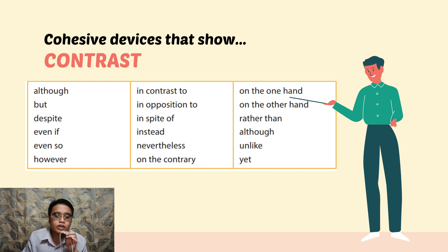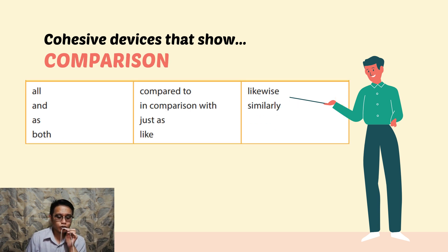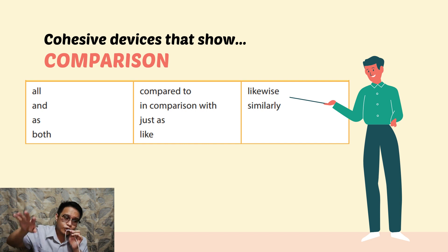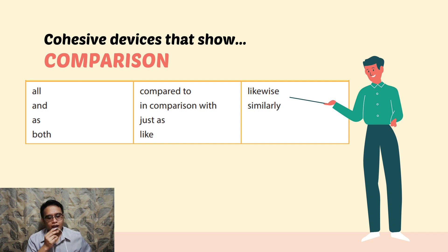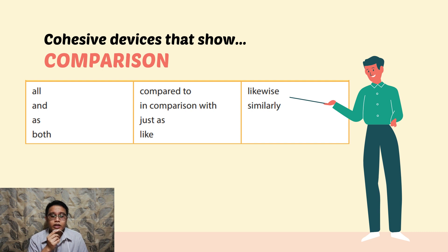Next, if we are comparing ideas — if they are similar — we use cohesive devices for comparison. These include: and, as, both, compared to, in comparison with, just like, likewise, and similarly. For example, using 'like': 'He has done something like it was never done before' — he is compared to others who have never done it. That's a comparison.